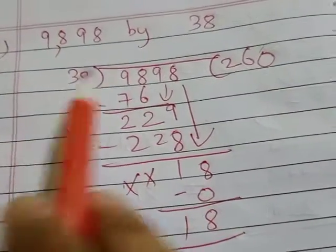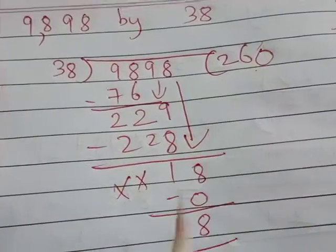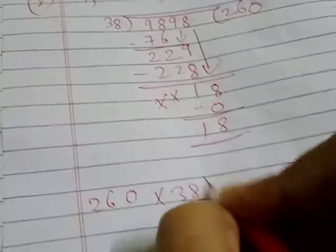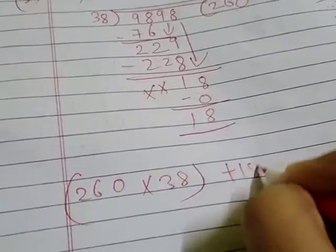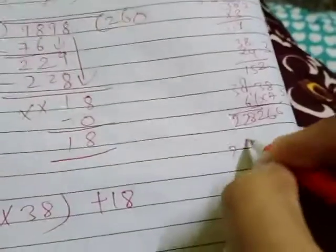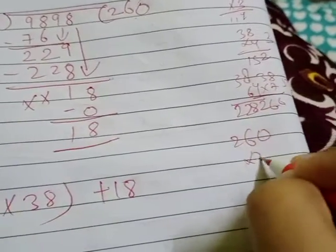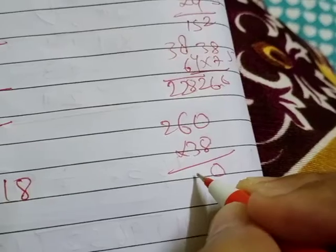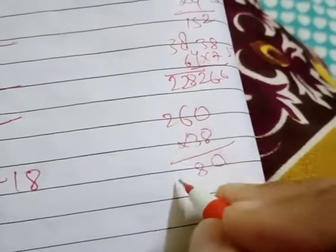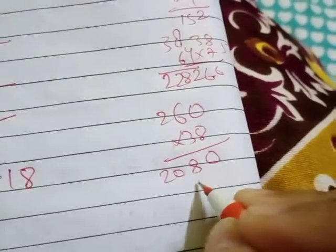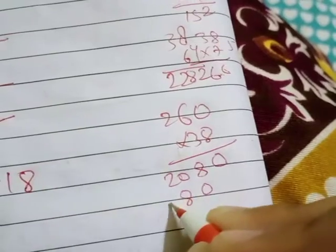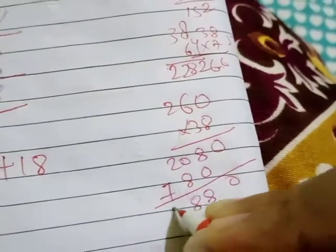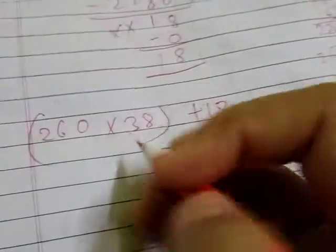Now let's check: 238 times 38 plus 18. In rough, we multiply: 8 times 0 is 0, 8 times 8 is 64, carry 6. Continue multiplying... We get 9898.